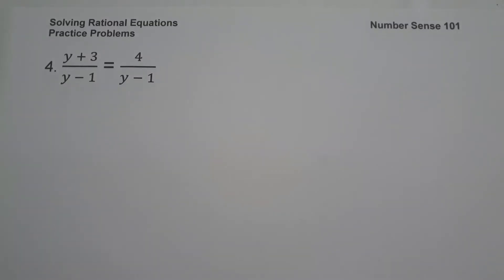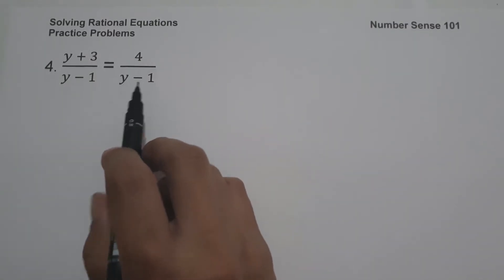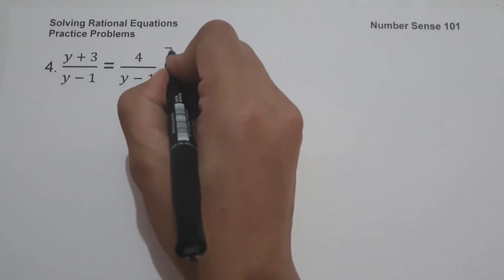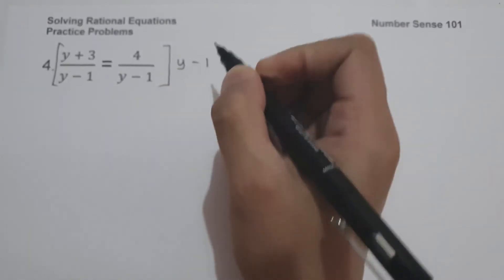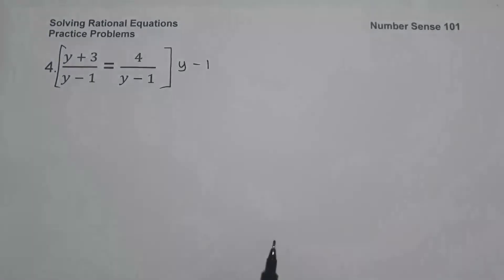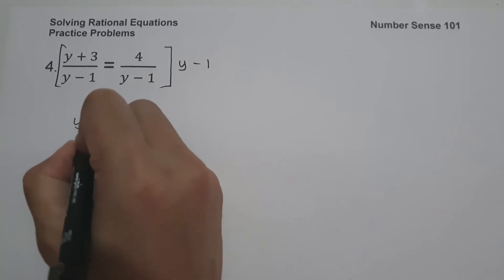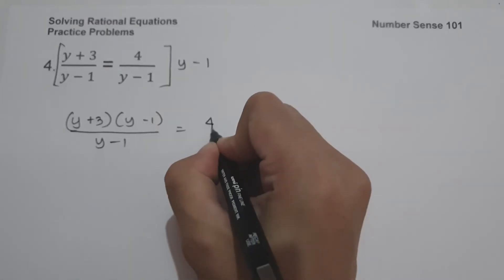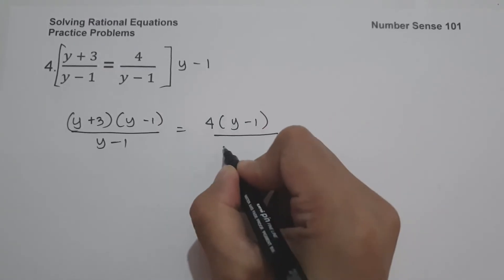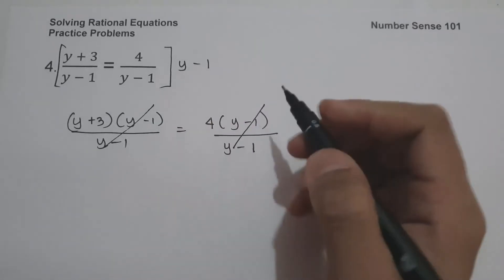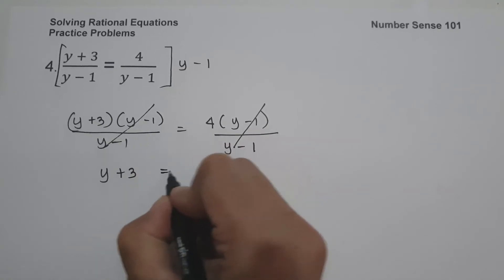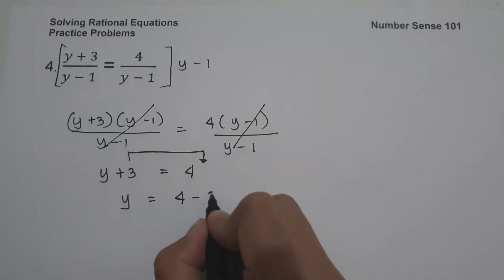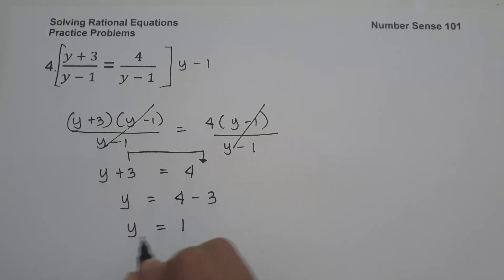Example number 4: we have y plus 3 all over y minus 1 equals 4 over y minus 1. As you can see, we have the same denominator. All we have to do to eliminate the denominator is to multiply the whole equation by y minus 1. This cancels the denominators, giving us y plus 3 equals 4. Moving 3 to the other side gives y equals 4 minus 3, so the value of y is 1, and this will be our answer.